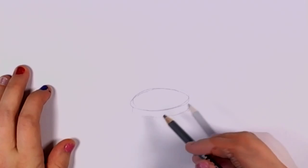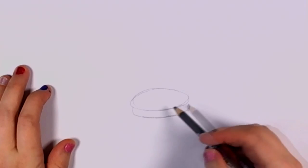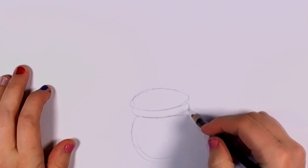And then draw the lid of the pot, which is just kind of like, it's almost like you're drawing a mason jar, just a really round mason jar.